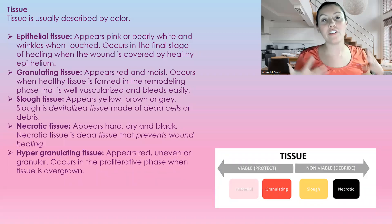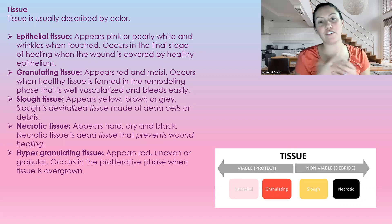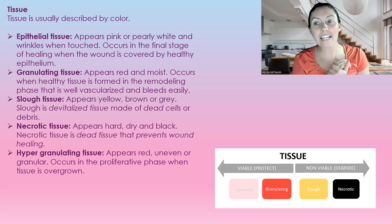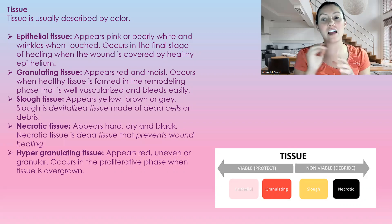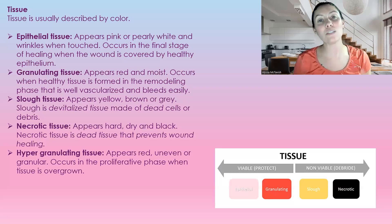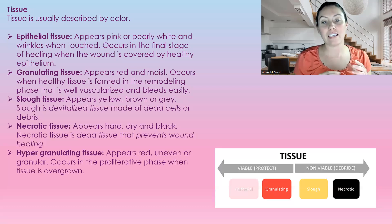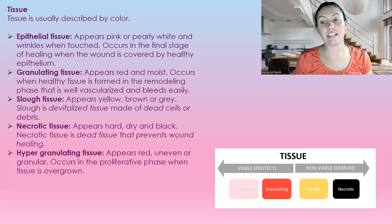So we'll go over the different tissue types as a review. Epithelial tissue is your skin — this is the final stage. It appears pink, it can be pearly white, and it wrinkles when you touch it. It occurs in the final stages of healing when the wound is covered by healthy epithelium. Granulation tissue appears red and moist — this is what we want for a wound. It occurs when healthy tissue is formed in the remodeling phase that is well vascularized, meaning good blood flow. It sometimes does bleed easily, not always.